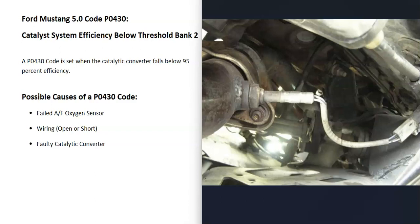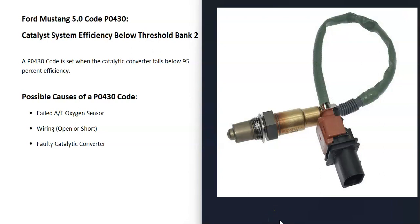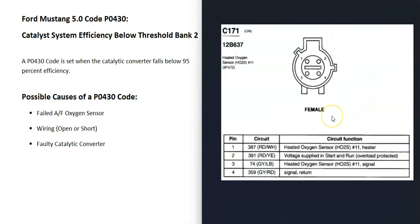When I get this problem, I test the O2 sensors first to see if they've failed. These O2 sensors have two parts: one part has a sensor that detects oxygen levels and reports back to the computer how much oxygen was burnt off during combustion, which the computer uses to adjust the air-fuel ratio. Then there's another part that has a heater element inside it, and when you get a P0430 code, this is the part of the sensor you want to look at.